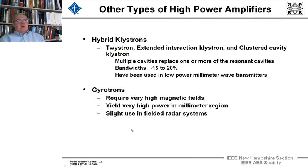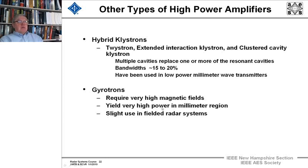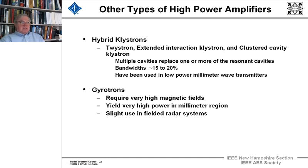There are many other types of high-power amplifiers. Two worth pointing out are hybrid klystrons — called twystrons — extended interaction klystrons, and clustered cavity klystrons. These are hybrids of klystrons that replace one or more resonant cavities to give wide bandwidth, and have been used in low-power and millimeter-wave transmitters. Gyrotrons have also yielded high power in the millimeter-wave region and are on operational fielded radars, though they require very high magnetic fields.